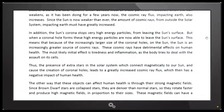In addition, the sun's corona stops very high energy particles from leaving the sun's surface. But when a corona hole forms, these high energy particles are now able to leave the sun's surface. This means that because of the increasingly larger size of the corona holes on the sun, the sun is an increasingly greater source of cosmic rays. These cosmic rays have detrimental effects on human health.